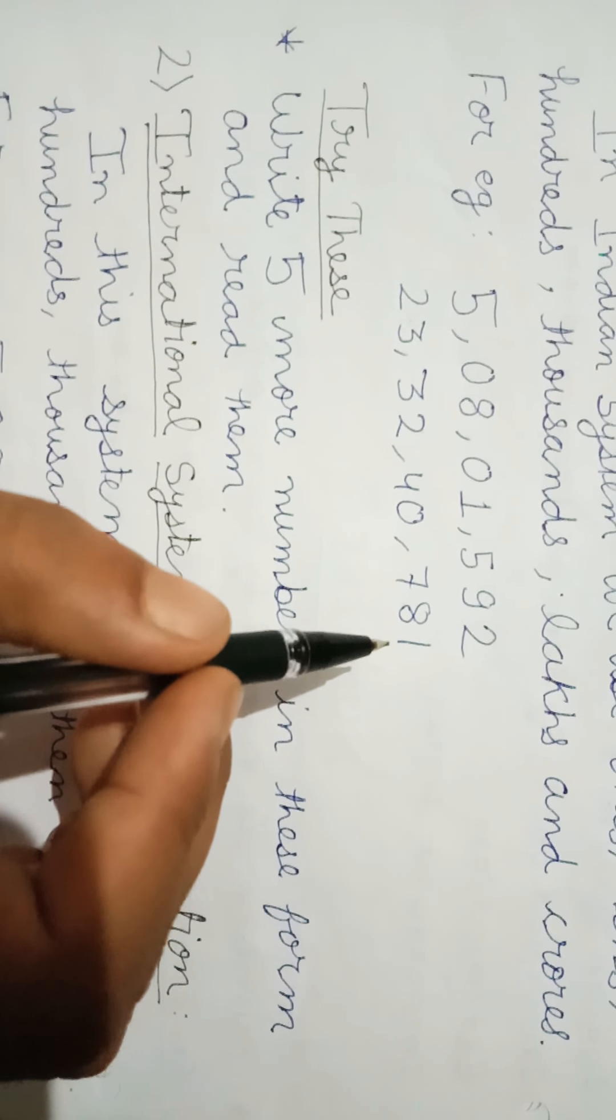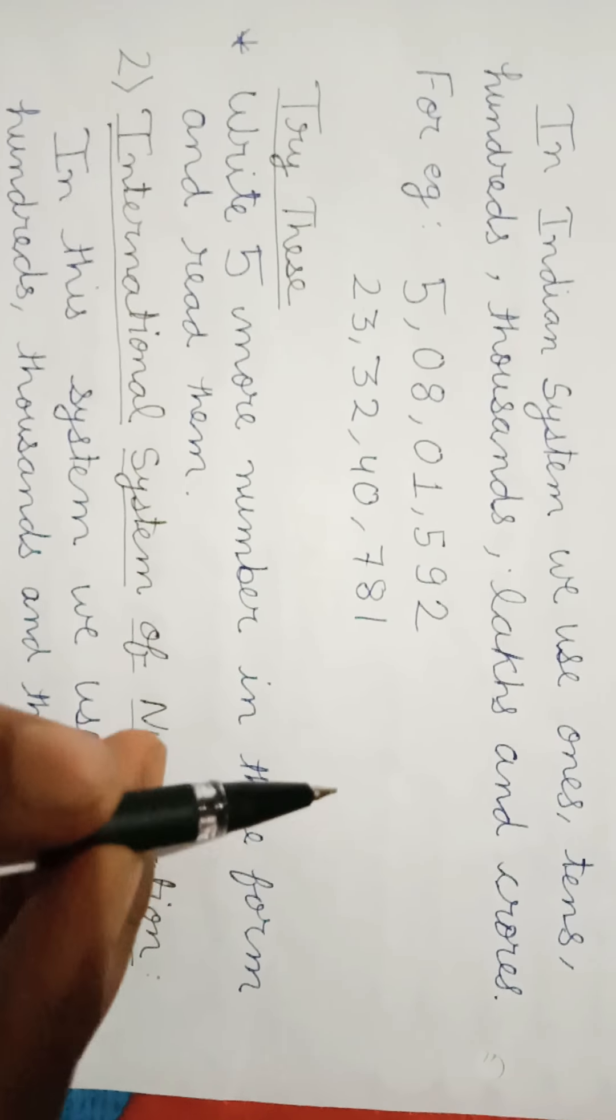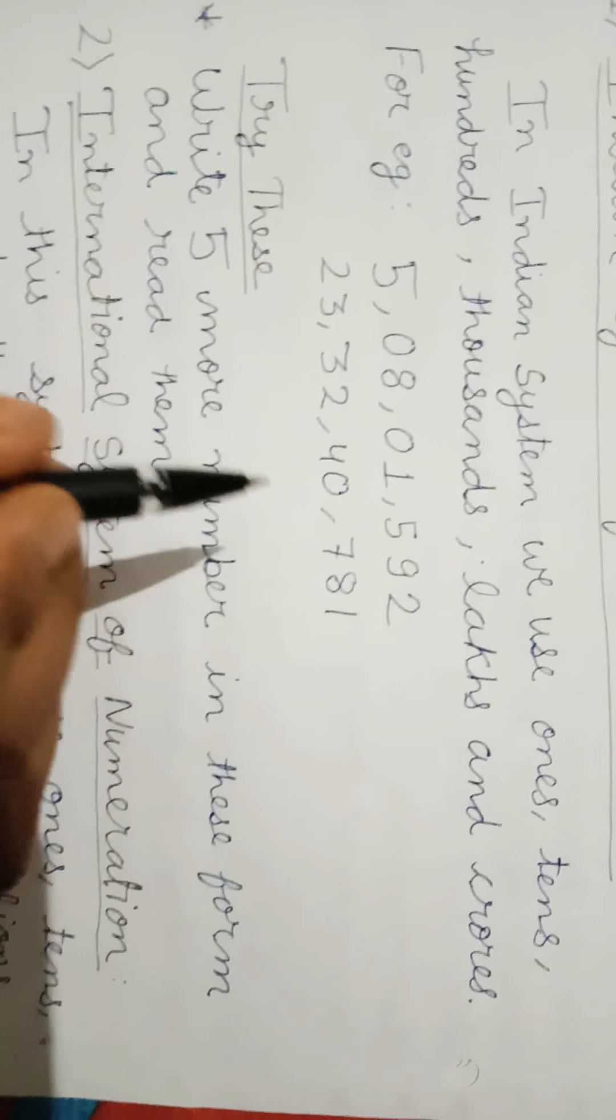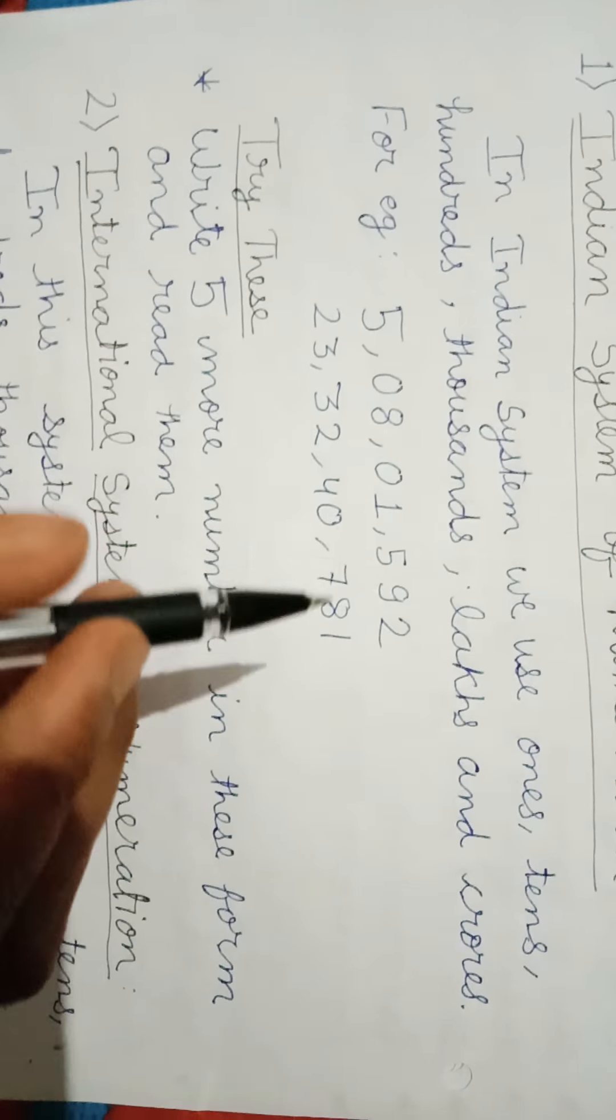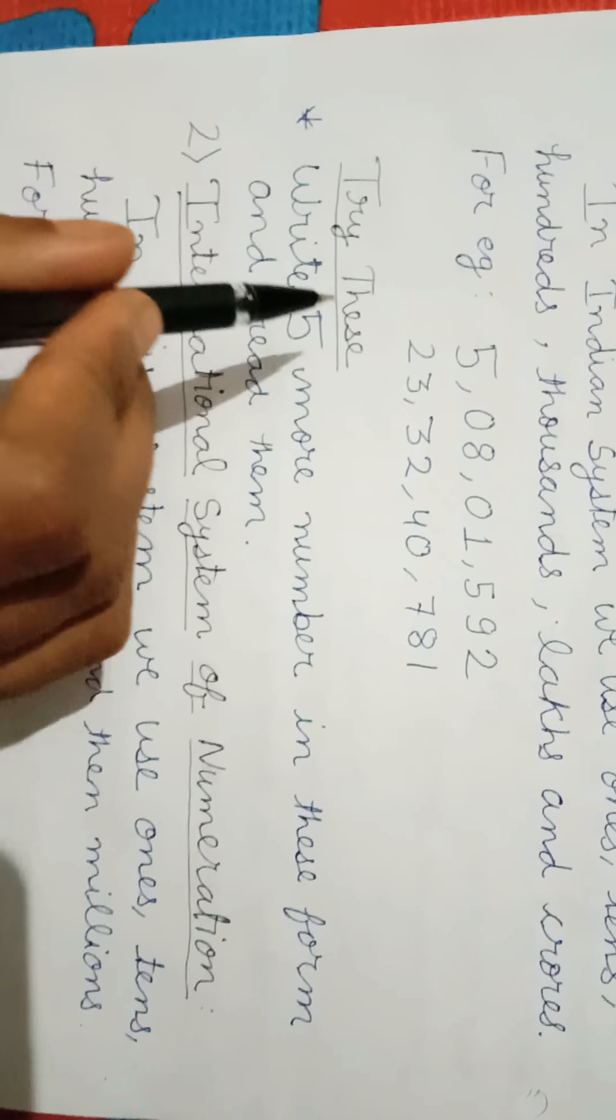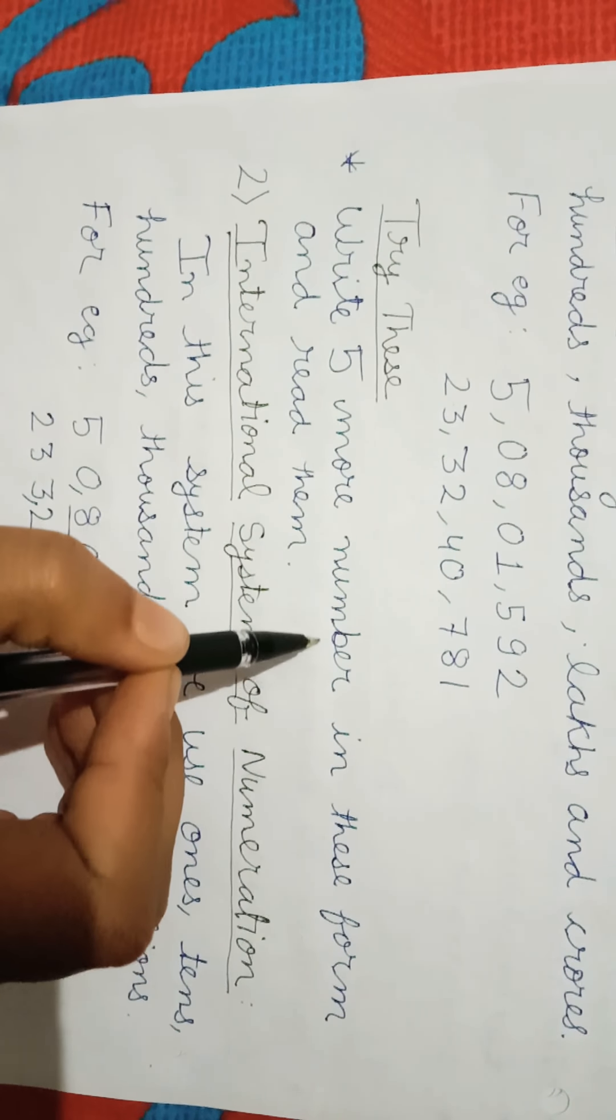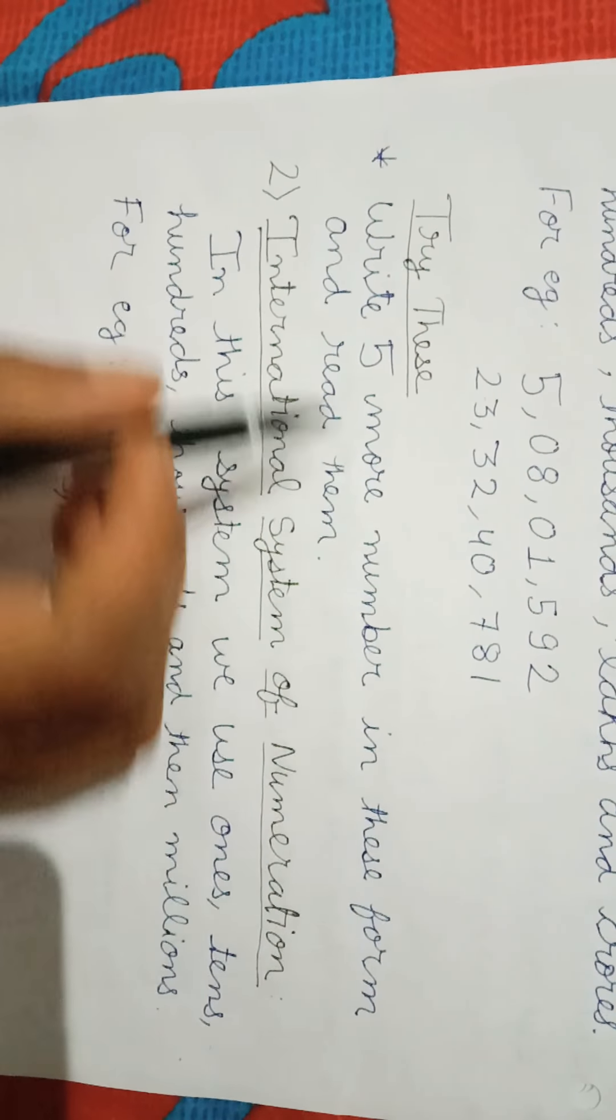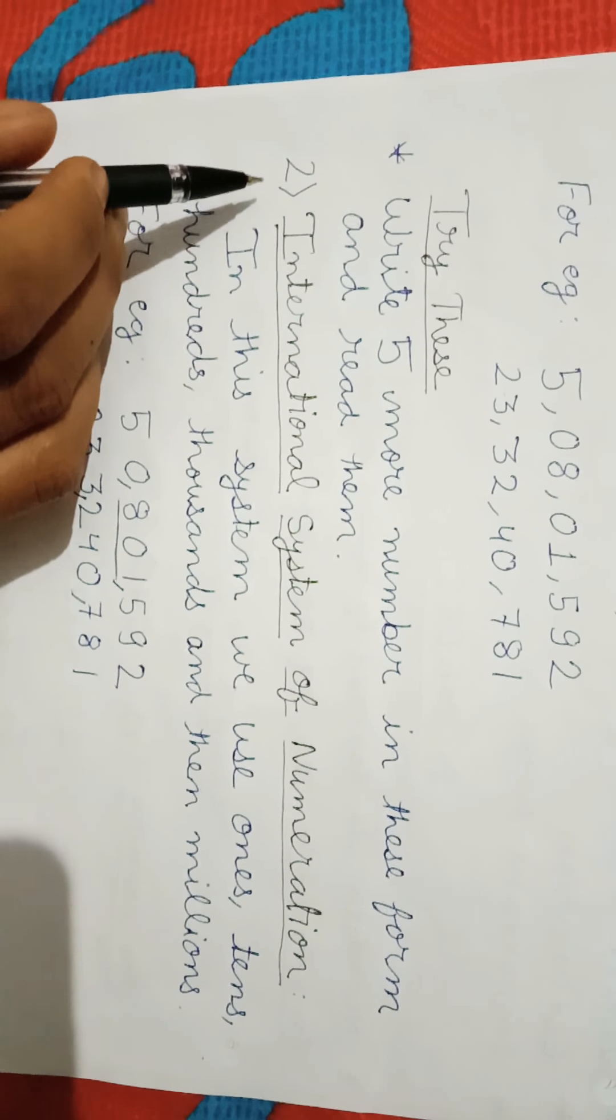Keep in mind that in Indian system, commas first come after 3 digits and then after 2 digits, 2 digits. Guys, please try this at your home. Write 5 more numbers in this form and read them.